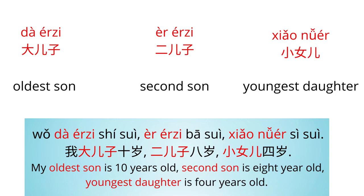My oldest son is ten years old, second son is eight years old, youngest daughter is four years old: 我大儿子十岁，二儿子八岁，小女儿四岁. 大儿子 means 'oldest son,' 二儿子 means 'second son,' and 小女儿 means 'youngest daughter.'